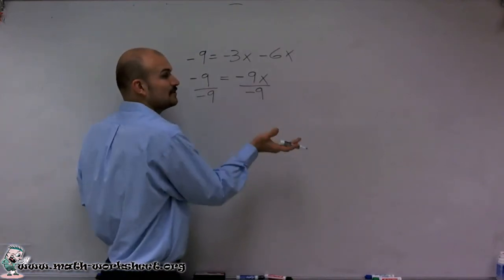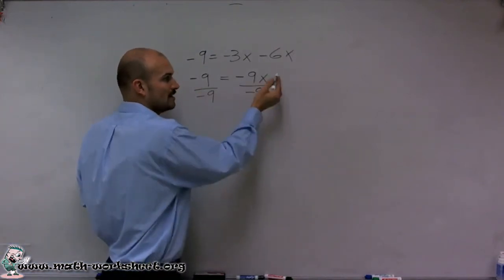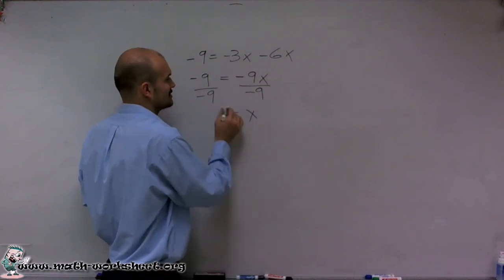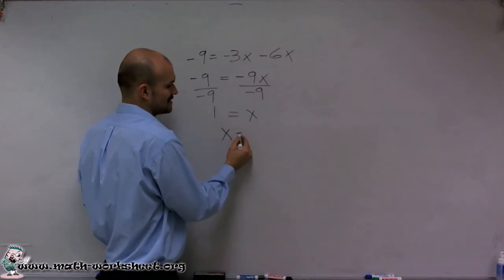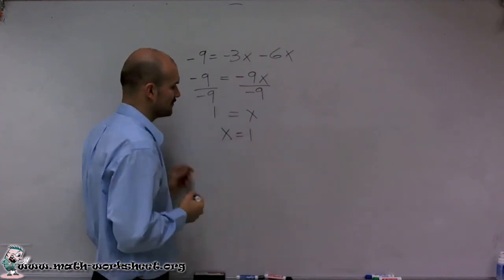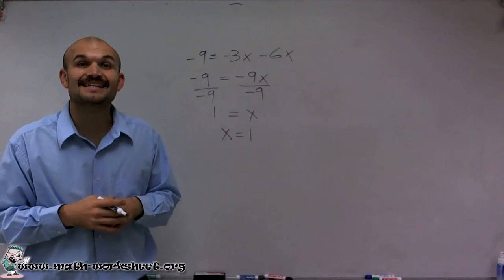Now negative 9 divided by negative 9 is going to divide into 1, and 1 times x is going to leave me with x. We like to rewrite it so our variable is in front, so we can say x equals 1.